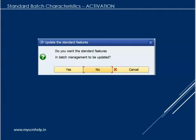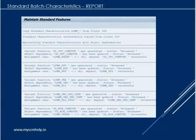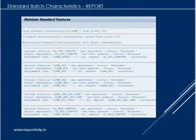Click the Yes button to confirm. The system will take a few seconds to run, and you can see standard features getting activated — for example, copying the standard BOM characteristics. The system copies the characteristics from the reference client, which is the triple zero (000) client, and all characteristics will then get activated.